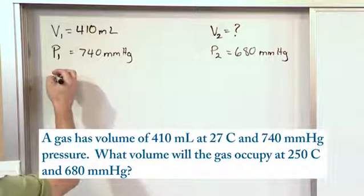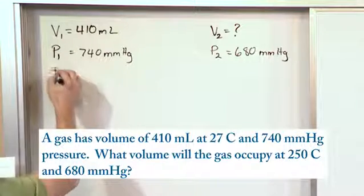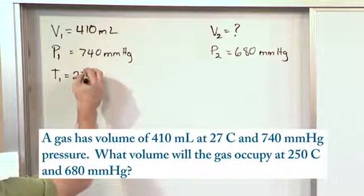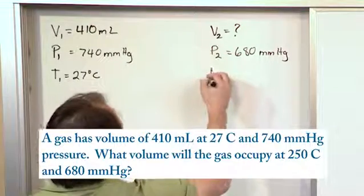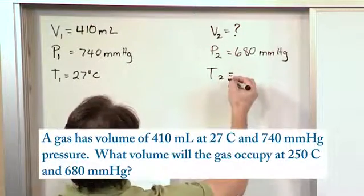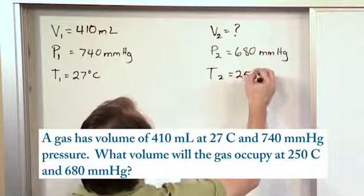All right, and then here we have the temperature. So the initial temperature, T1, is 27 degrees Celsius. And T2, the final temperature, is 250 degrees Celsius.